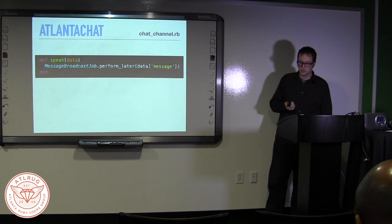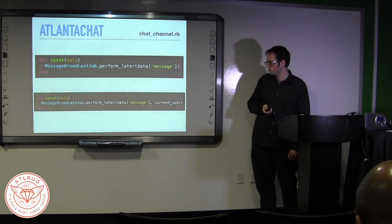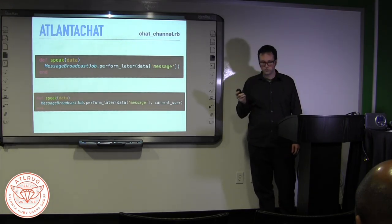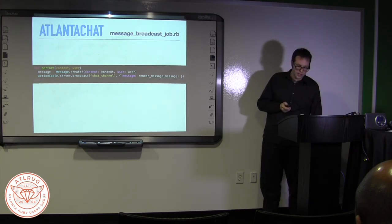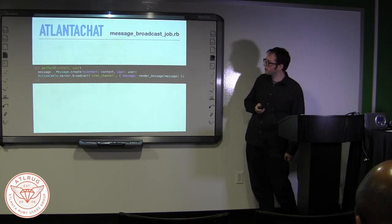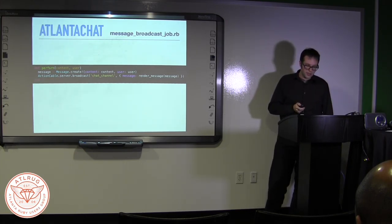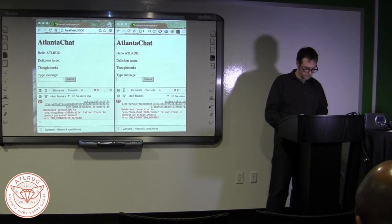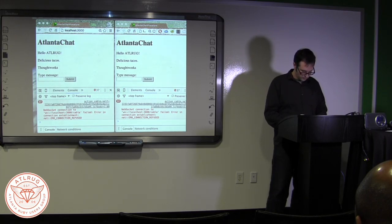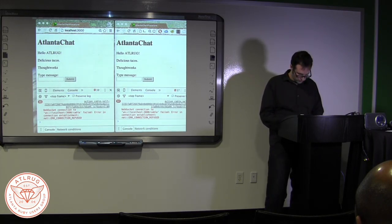So let's pass in the current user to our chat_channel.rb so we can create some messages. Last we saw it, the speak method was sending responsibility to our message broadcast job. So let's add the current user in like so. Head over to our job and catch that user on our perform action and pass it to our message creator. And so now let's check out if everything's working.